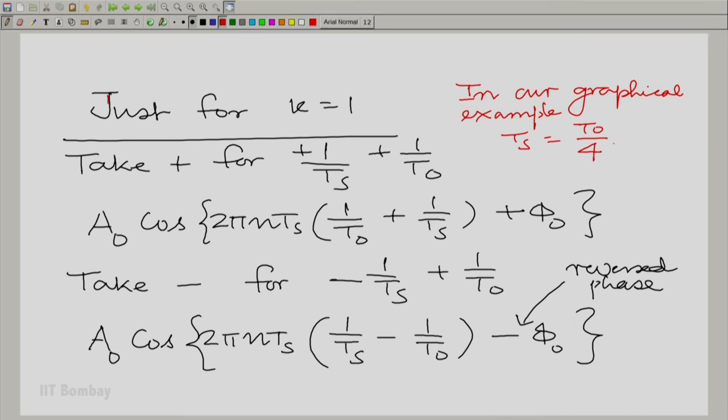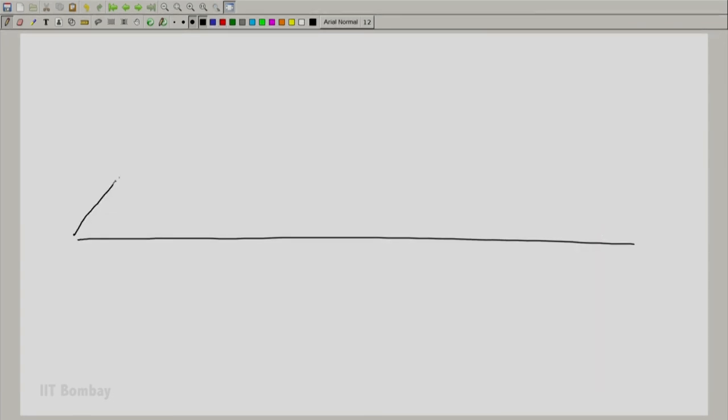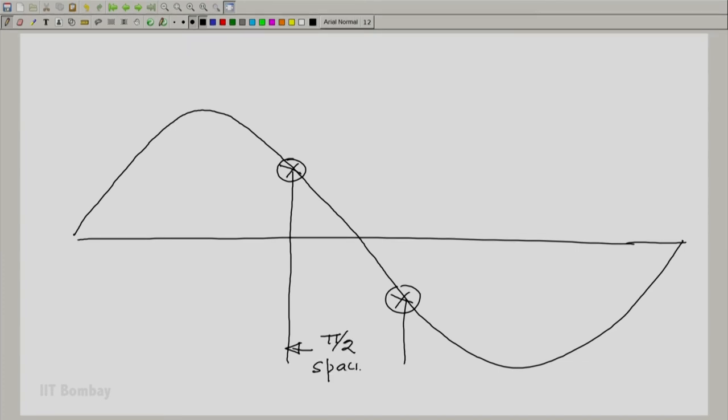Let me write it down. In our example, in our graphical example in this discussion, T_s was equal to T_0/4. So essentially, you would see 1/T_0 + 1/T_s is 5/T_0, and 1/T_s which is 4/T_0 minus 1/T_0 is 3/T_0. Now, in fact, that will make it very clear if you look at the graphical situation too. So let us draw it again, just that part.